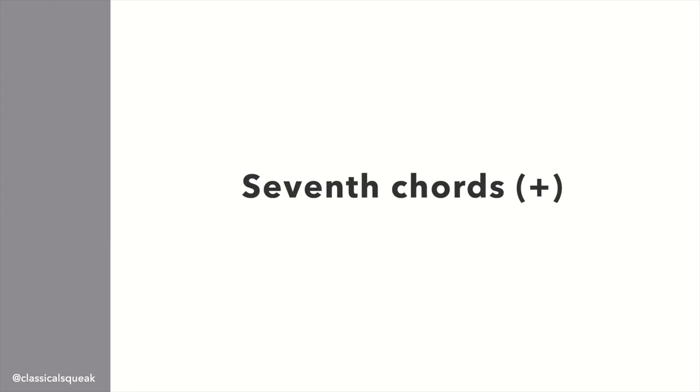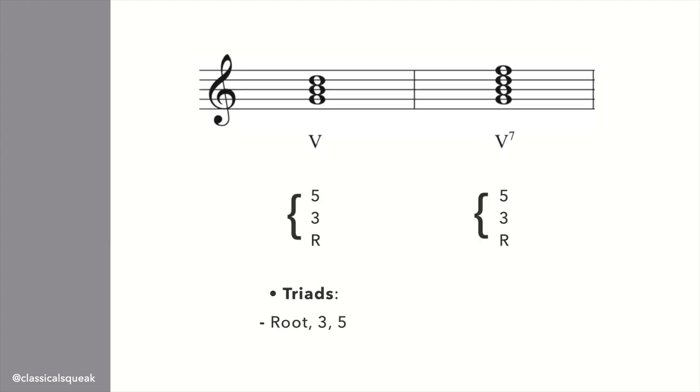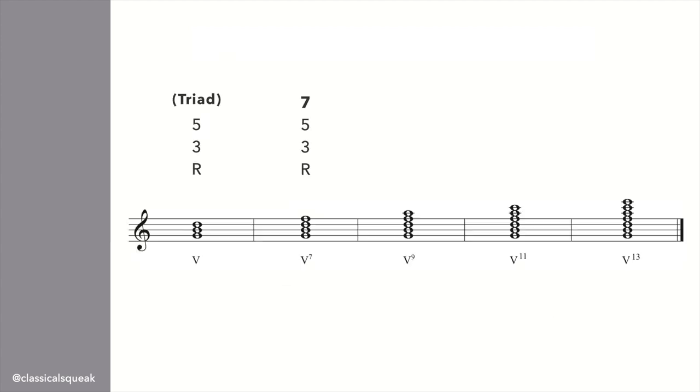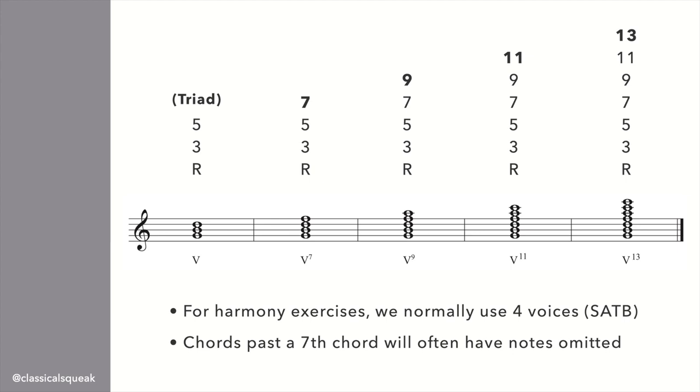Moving on to 7th chords. A 7th chord is a triad plus a note that forms an interval of a 7th above the root of the chord. Earlier we counted 1 to 5, now we go up to 7. We can expand on the stack, and each note we add will have that new name, so 9th, 11th, 13th chords. However, with these bigger stacks, certain notes are commonly omitted when dealing with those SATB chorales.